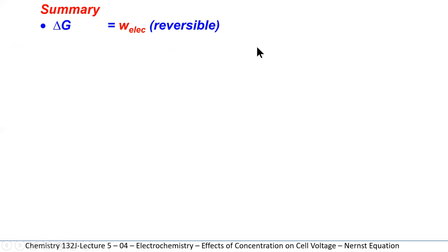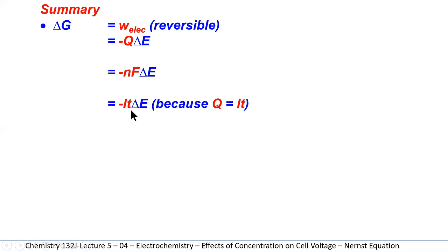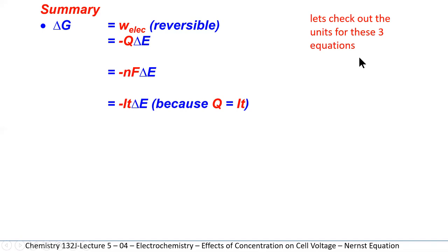In summary, delta G equals the work done by the electrons as they flow through the electrochemical cell. It can equal minus Q times delta E, or minus NF times delta E, or minus iT times delta E, because Q equals iT. In this case, Q refers to charge. Let's check out the units for each of these equations.